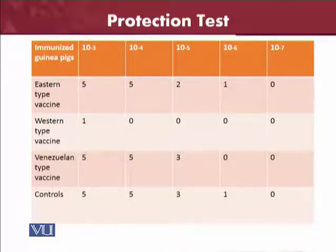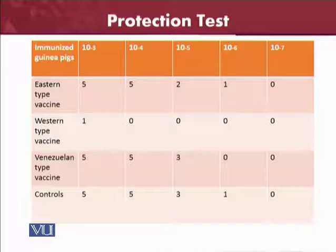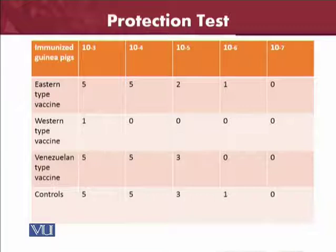In the example given, for Eastern type vaccine at dilution 10^3, the result is 5 and 5, and the immune response is equal to 2. Along with the experimental guinea pigs, we also have control guinea pigs which are provided the same dose of vaccines. You can see in the controls at 10^5, Venezuelan type vaccines show the same reading along with the control, and at 10^5, the Eastern type vaccine is also true. At 10^6 and 10^7, there are no results and no immunity produced at all.